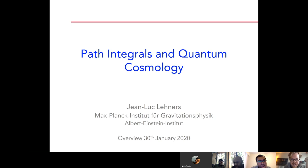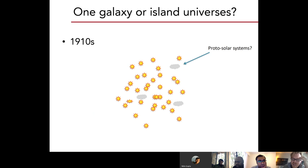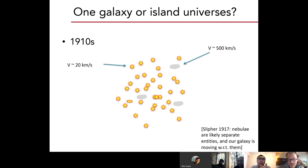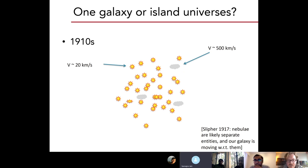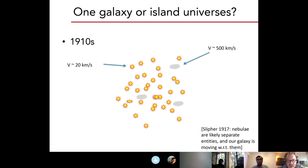First it may be useful to go back briefly to about 100 years ago when it wasn't even clear that we had many galaxies in the universe. There were stars and nebulae observed, but it wasn't clear what the nebulae really were. Many people thought they were just solar or star systems in formation, which happened to be true for some of them, but not all of them. Only when Slipher started measuring the velocities of these, and later Hubble with more precision, it became clear that these nebulae cannot all be within our galaxy. The picture emerged that these are separate galaxies.